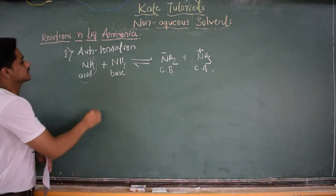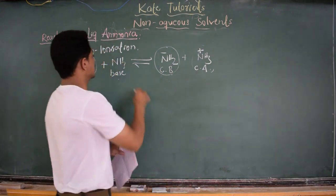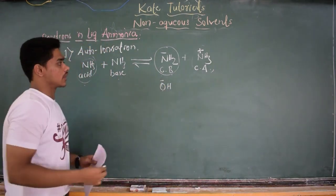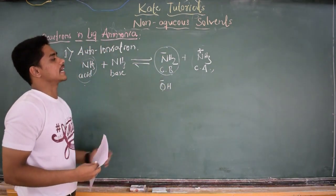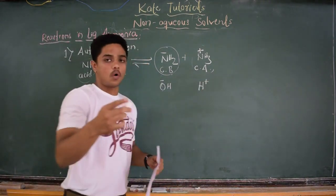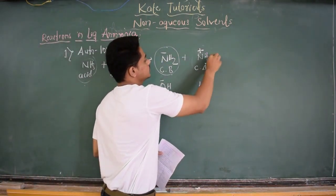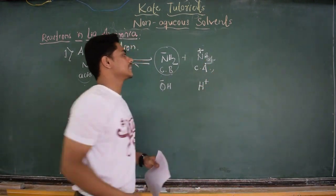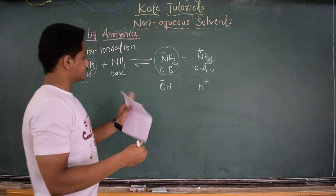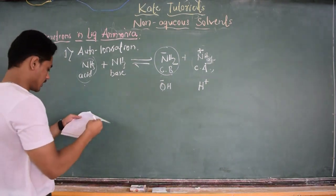NH₂⁻ acts as base in ammonia solvent, just like OH⁻ acts as base in water solvent. And NH₄⁺ acts as acid in ammonia, just like H⁺ acts as acid in water solvent. This is about autoionization, and also acid-base reactions which we have discussed.